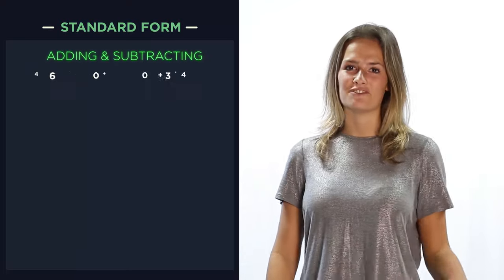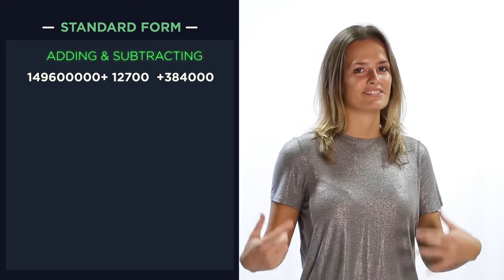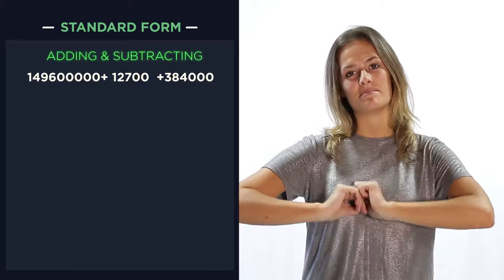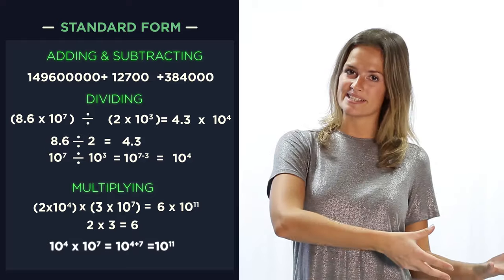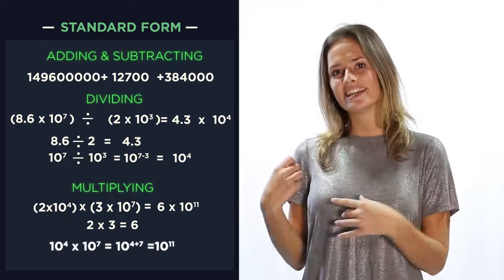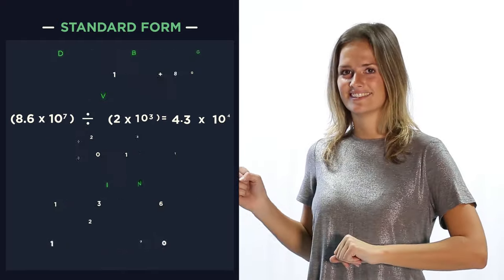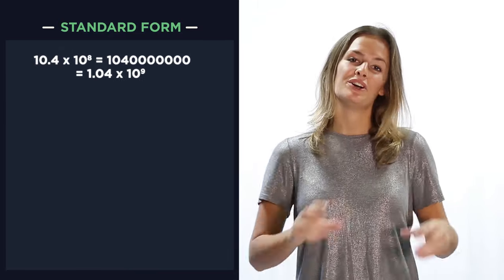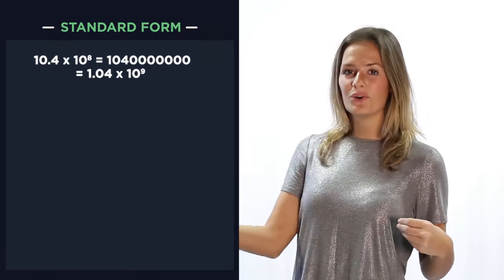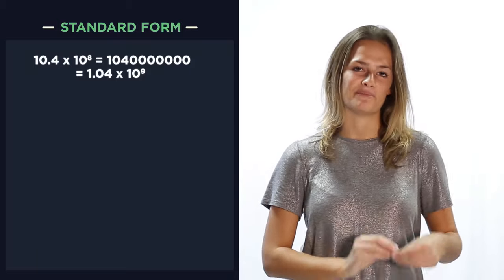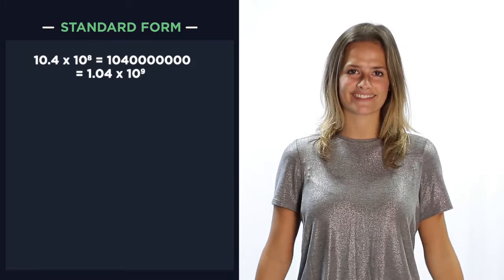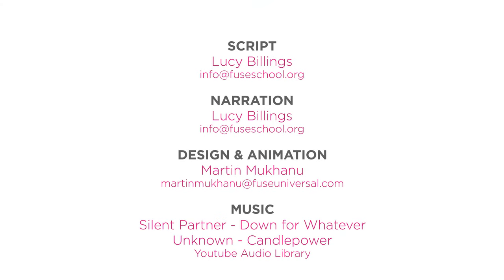So there you have calculating with standard form. Adding and subtracting is really easy. We just write them out into ordinary numbers. And then multiplying and dividing, you do a numbers calculation and then an indices calculation. If in doubt, write the number out into an ordinary number and then write it back into standard form to make sure you don't make any mistakes.